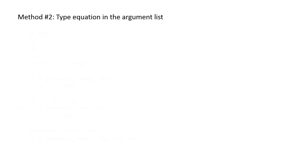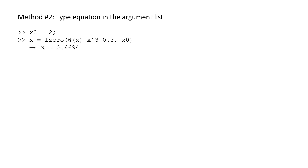Instead of creating an anonymous function, you can type the function directly in the argument list. We set the initial guess x0 equal to 0. Then type: x = fzero(@(x) x^3 - 0.3, x0). As before, we find that the root is approximately 0.6694.